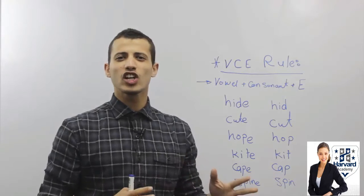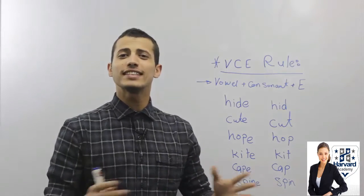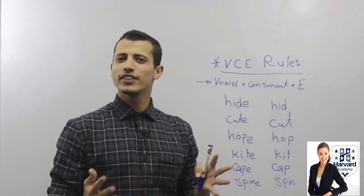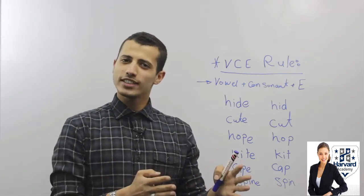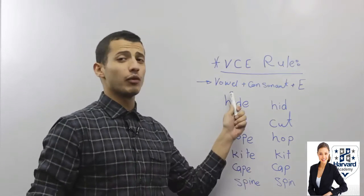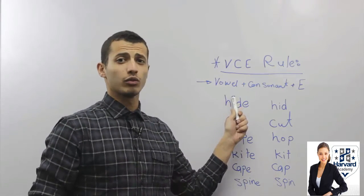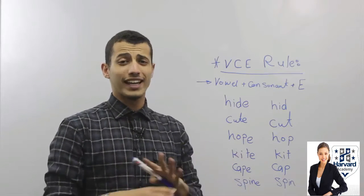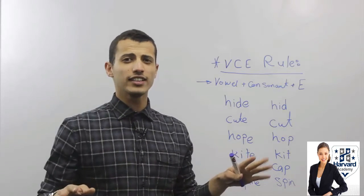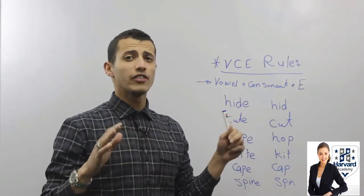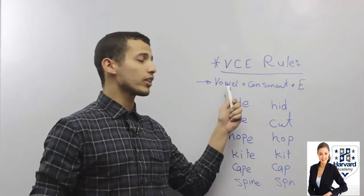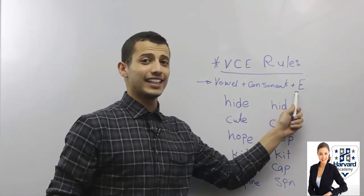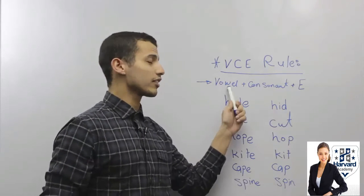Today we're going to talk about the VCE rule. What's the VCE rule? Whenever you see a word that ends with a vowel — the five vowel letters: A, E, I, O, and U — and any other letter is a consonant. So whenever you see a word that ends with a vowel, then a consonant, then E, you're going to pronounce